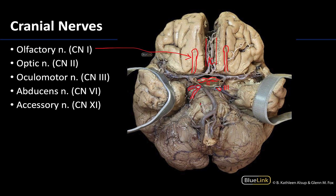You can see the abducens nerve right here, very closely associated to the pons of the brain. Lastly, you can see the accessory nerve running up from the spinal cord — it's been cut closer to the spinal cord. It will ascend through the foramen magnum and has a really close relationship to the posterior inferior cerebellar artery, or PICA.